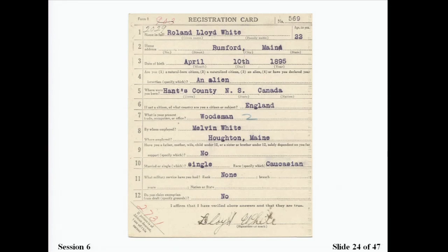This is a typewritten card — some cards were filled in by hand while others were typed using typewriters or typesetting machines. This gentleman was a woodsman. The card also lists his marital status as single and his race as Caucasian. This represents what most cards look like when people receive them — not a lot of information, but enough to tell you where this person was during the World War I draft process.